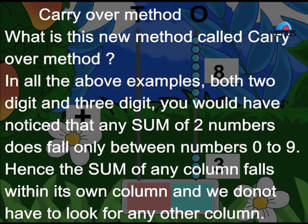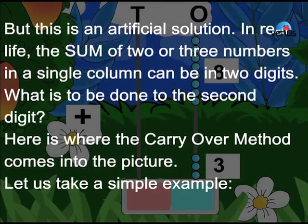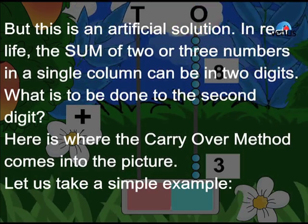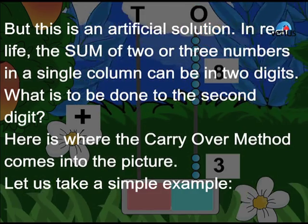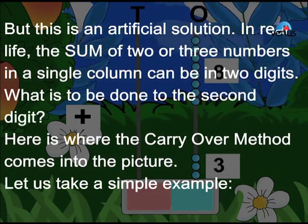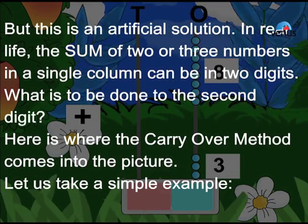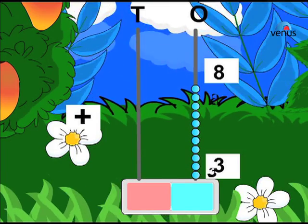But this is an artificial solution. In real life, the sum of two or three numbers in a single column can be in two digits. What is to be done to the second digit? Here is where the carry over method comes into the picture. Let us take a simple example.